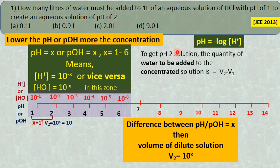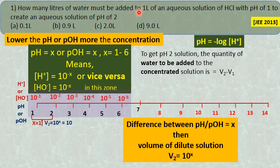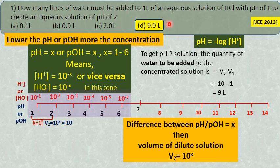Then, to get pH 2 solution, the quantity of water to be added to the concentrated solution — here the concentrated is pH 1 solution — is: net volume of dilute solution minus volume of concentrated solution. That is 10 minus 1, which is equal to 9 liters. So if you add 9 liters of water to 1 liter of pH 1 solution, you can get the pH 2 solution. Answer is 9 liters.